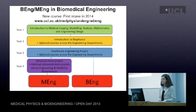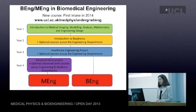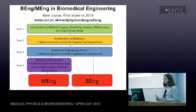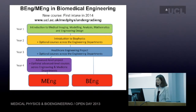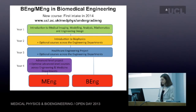Here is information about a degree that's new this year, with the first intake in September 2014 — the biomedical engineering degrees, the B-Eng or the M-Eng, as part of the new integrated engineering programme. The bachelor's degree is a three-year course and the M-Eng is a four-year undergraduate degree. The first two years are taught in conjunction with many other departments in the faculty of engineering. In the first year, you have an introduction to medical imaging and modelling, analysis, mathematics, and engineering design. In the second year, similar courses from our department — including introduction to biophysics — plus many optional courses from across the engineering faculty. In the third year, you do a healthcare engineering project. If you stay for a fourth year, you can do an advanced level project and choose advanced optional courses from across the engineering and medicine departments.